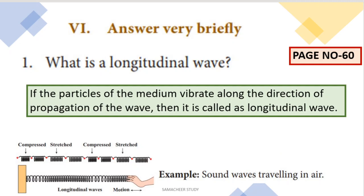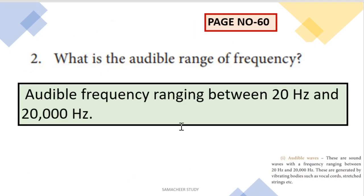Next question: what is the audible range of frequency? The audible range is the range of frequencies we can hear. The answer is 20 hertz to 20,000 hertz.